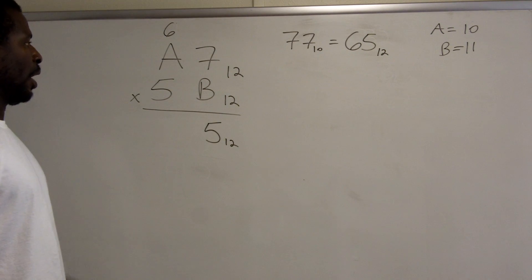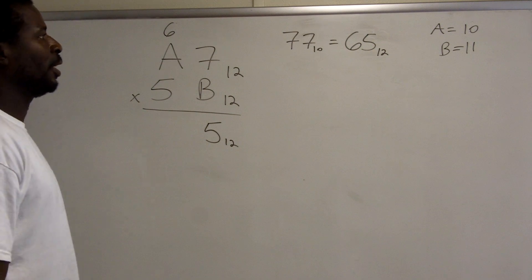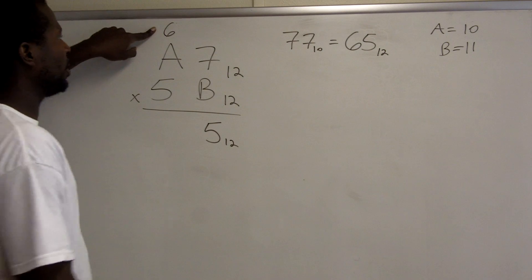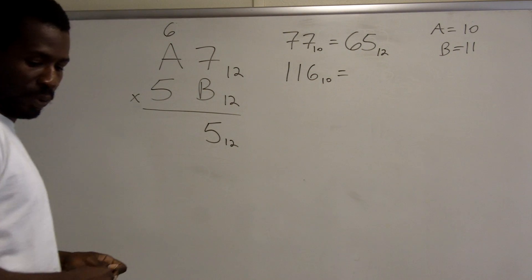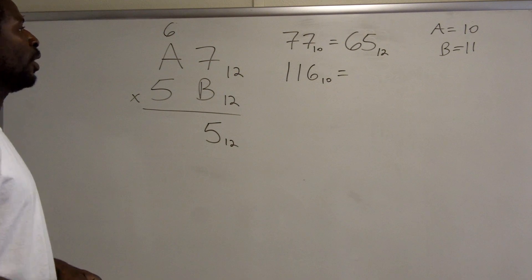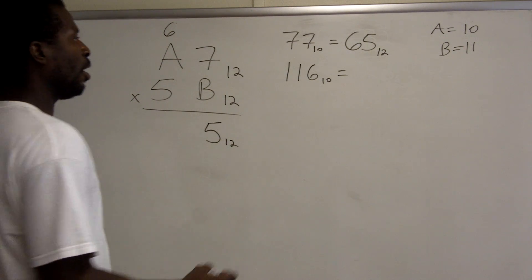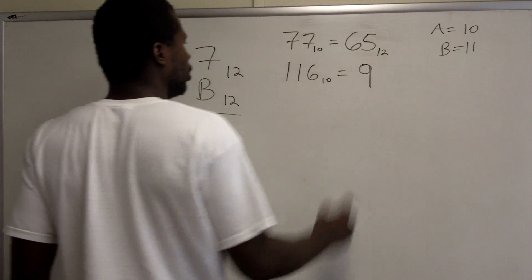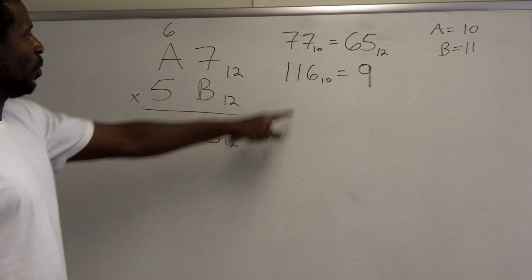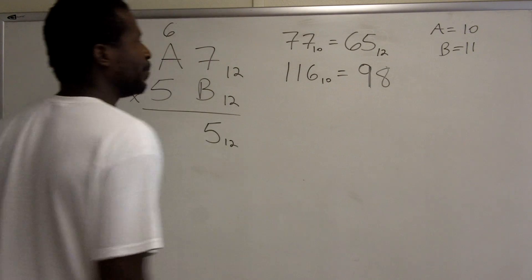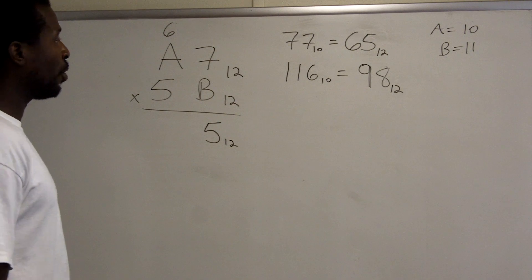Next, b times a is really 11 times 10, which equals 110. Adding the carried 6 gives 116 base 10. How many groups of 12 are in 116? There are 9 groups of 12, giving 108, with a remainder of 8. So 116 base 10 is 98 base 12. I record the 9 and the 8.